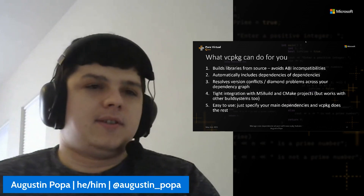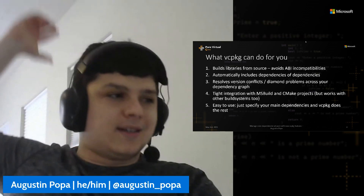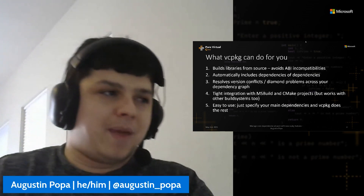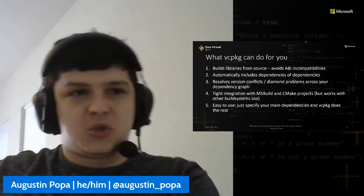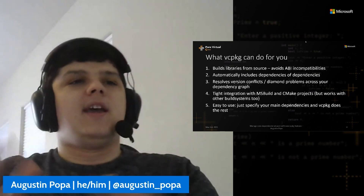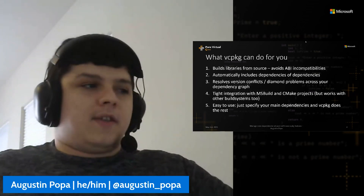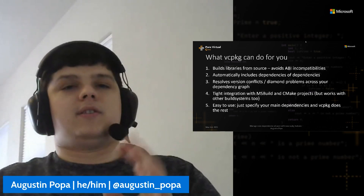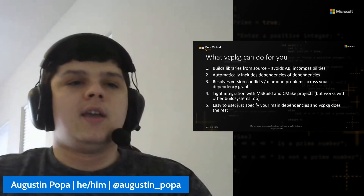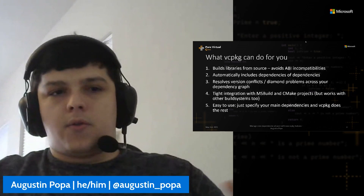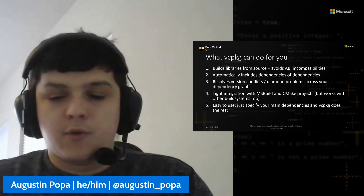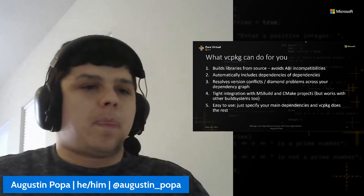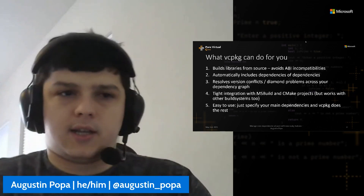When you acquire dependencies, those dependencies often have their own dependencies, and you think you're installing three but end up needing nine. If you're doing this manually — going to individual GitHub repos, figuring out build instructions, checking compatibility — that's not fun. vcpkg solves all that: you tell it which three libraries you want, and it installs their upstream dependencies automatically. Version conflicts are avoided. We also have particularly good integration with MSBuild and CMake, though you can use other build systems as well.